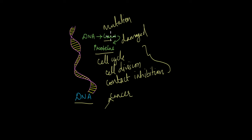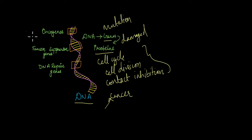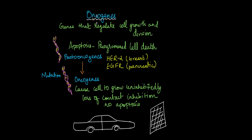So far, scientists have discovered three types of genes involved in the development of cancer: oncogenes, tumour suppressor genes, and DNA repair genes. Let's first talk about oncogenes. Some genes in the DNA regulate cell growth and cell division, and those genes are also involved in controlling apoptosis, which is a process known as programmed cell death.